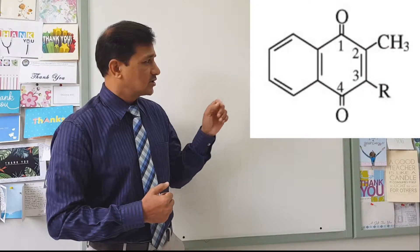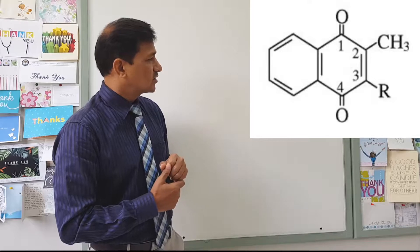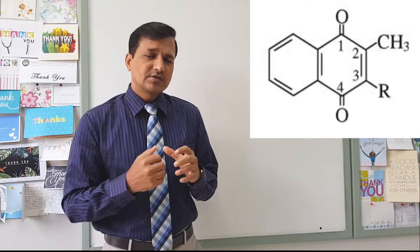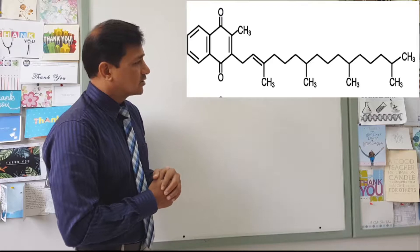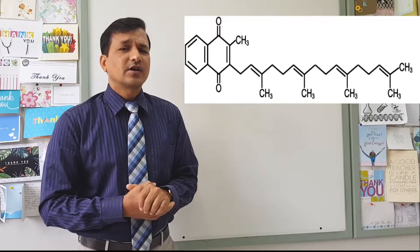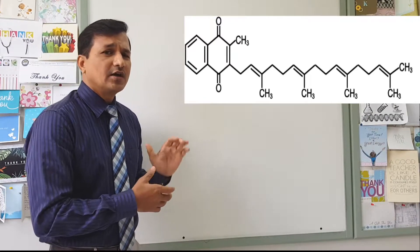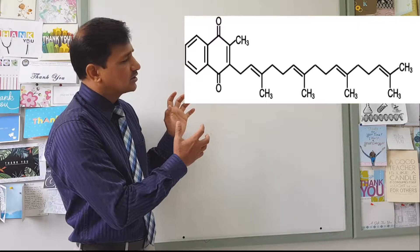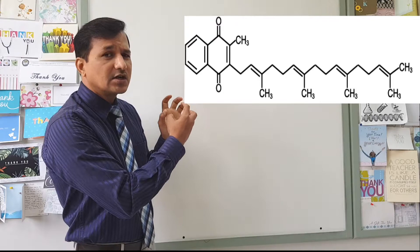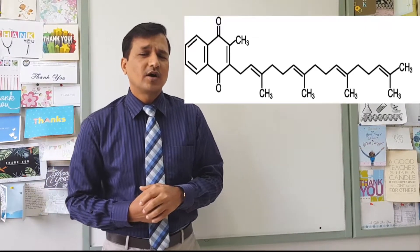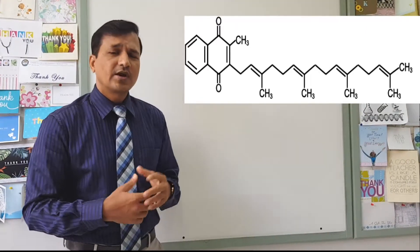Menadione has oxygen at the first carbon and the fourth carbon, and a methyl group at the second carbon, as shown in the figure. Vitamin K1 is phylloquinone, which has a phytol side chain at carbon number 3. Vitamin K2 is menaquinone, and there are different kinds of menaquinones - they all have isoprenoid side chains at carbon number 3. Menaquinones are similar to phylloquinone, except instead of a phytol side chain they have isoprenoid side chains.